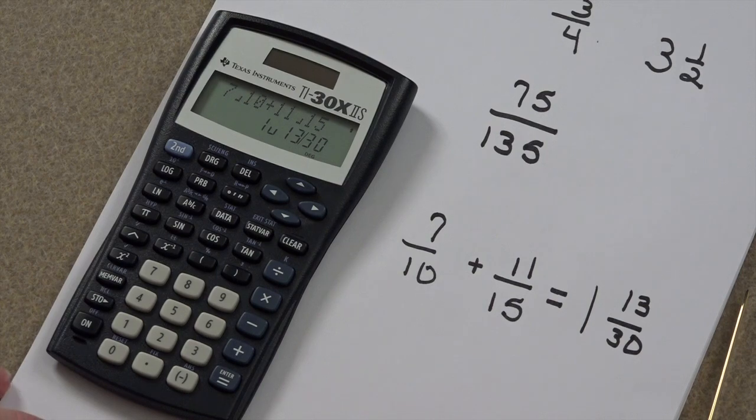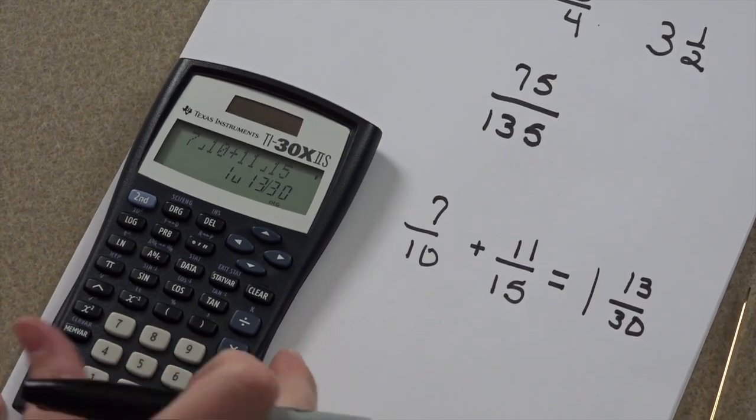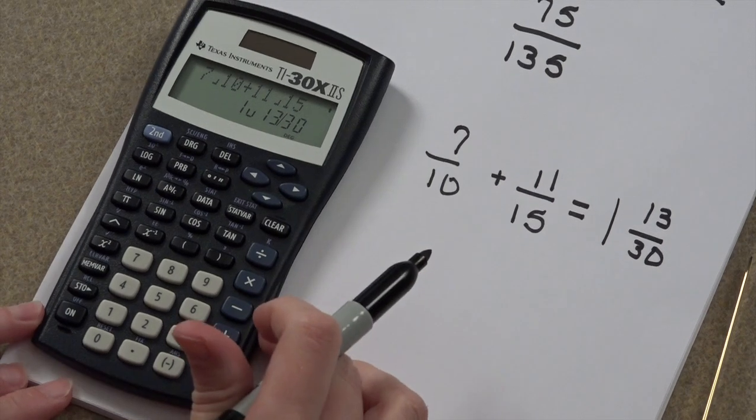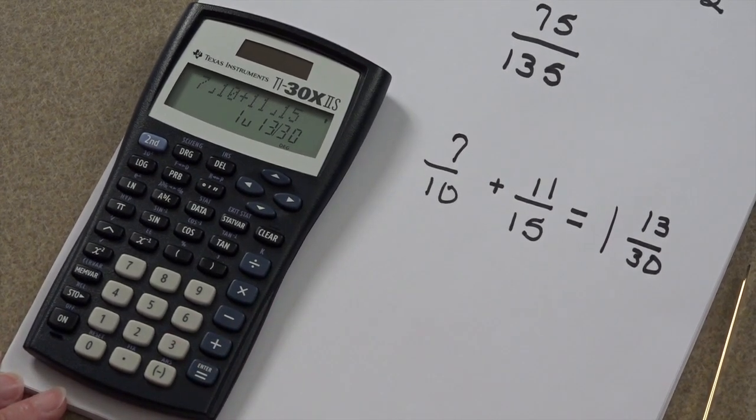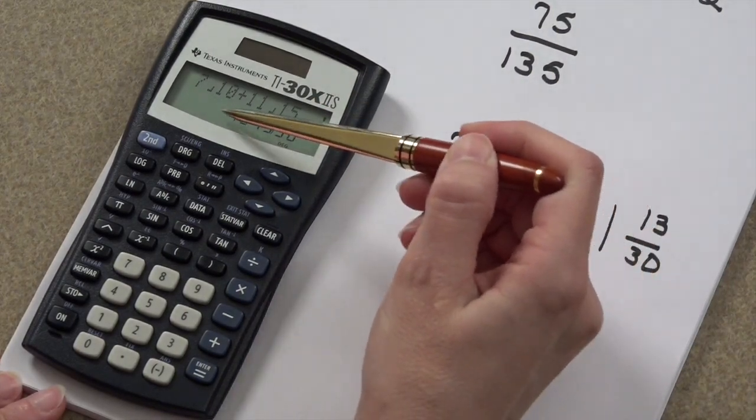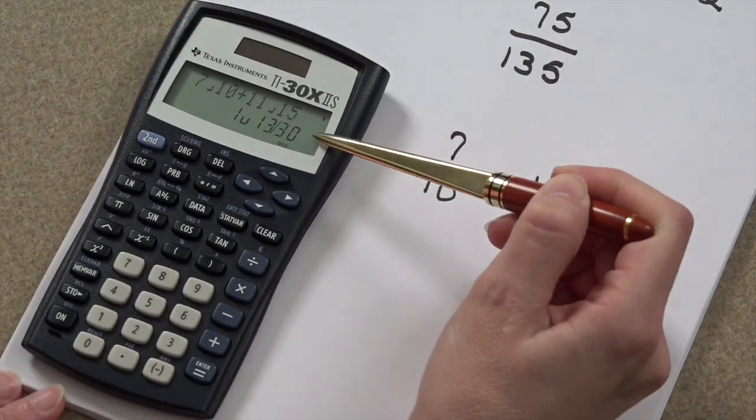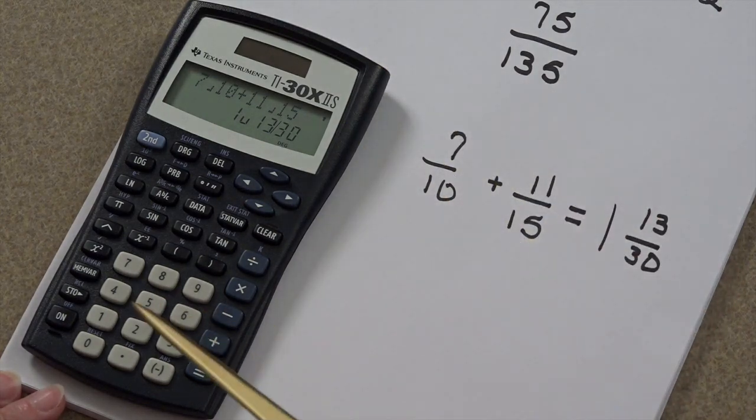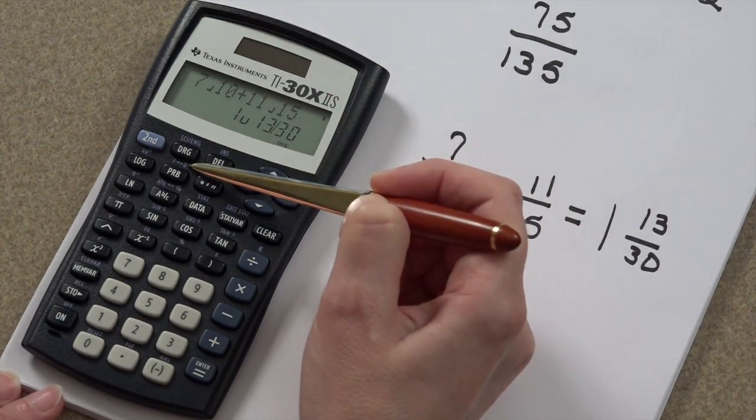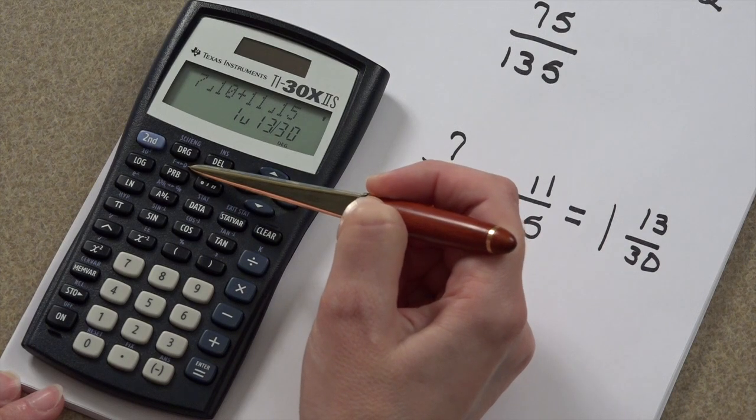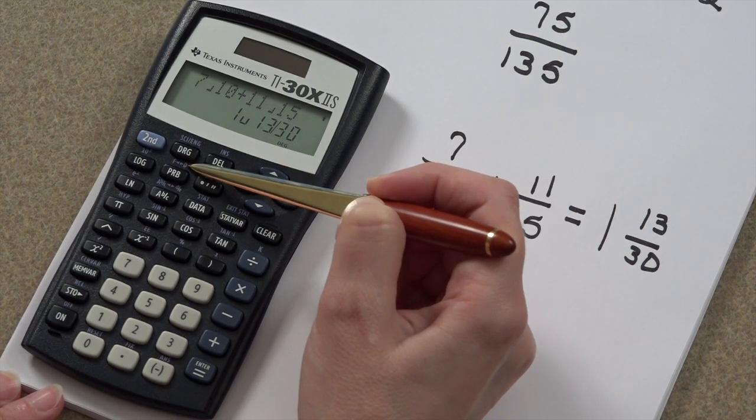Another great thing that your calculator can do is convert to decimals. That is so awesome! This is your mixed number. To convert this to a decimal equivalent, we can hit this F to D command. That stands for fraction to decimal.